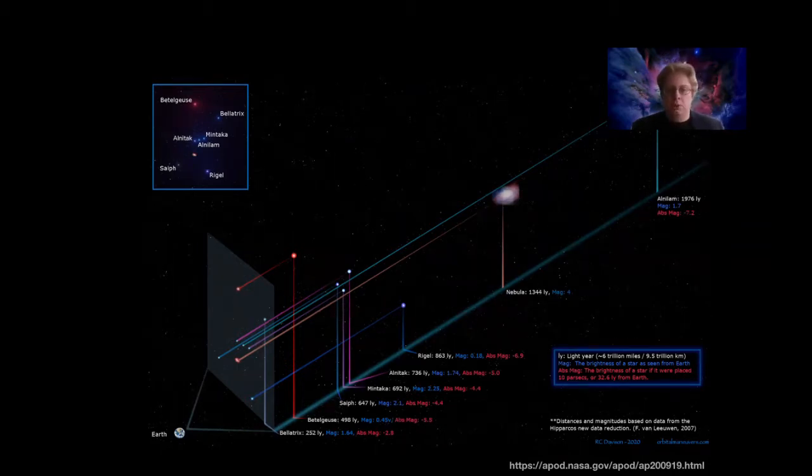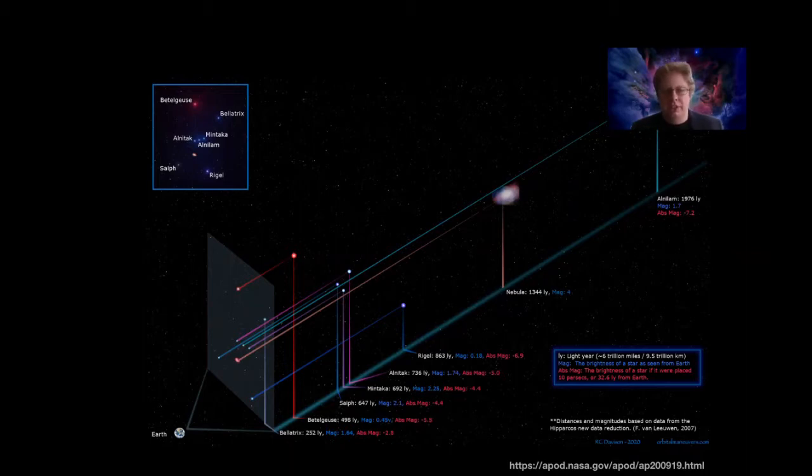So when you look at things in the sky one of the biggest challenges that astronomers have is trying to figure out how far away these things are. Because without that knowledge you really don't know what you're looking at. You don't know how far away it is. You don't know how bright it is. And you don't know if things are related or not.